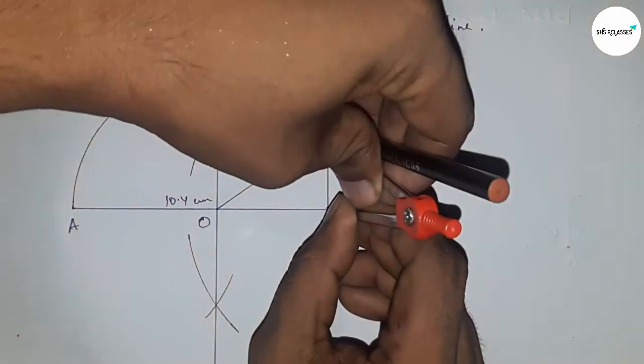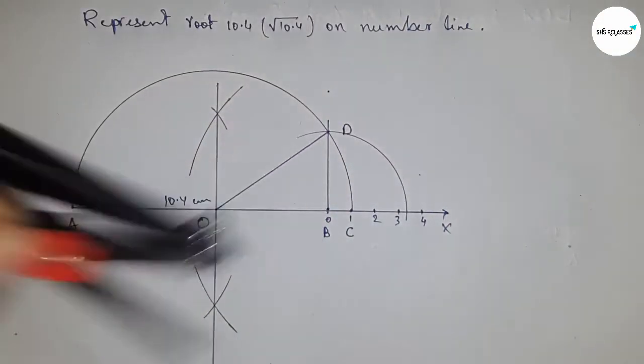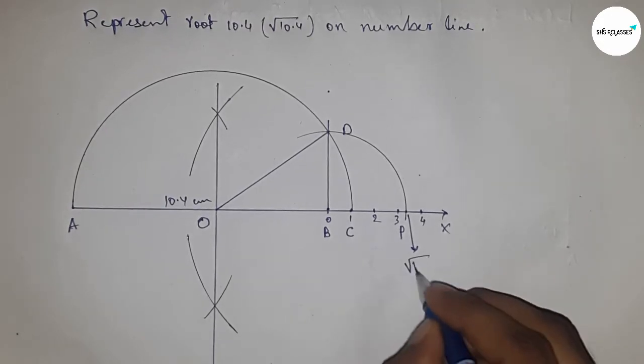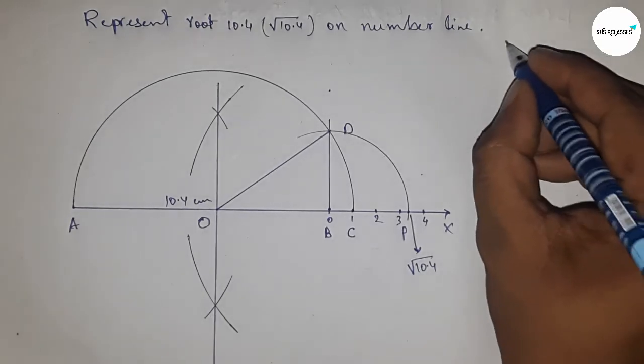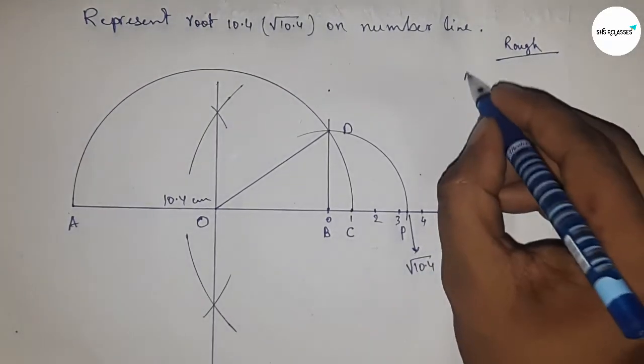Next, taking the distance BD by compass to draw an arc which meets the number line at point P. This is the representation of root 10.4 on the number line. Now discussing the calculation.